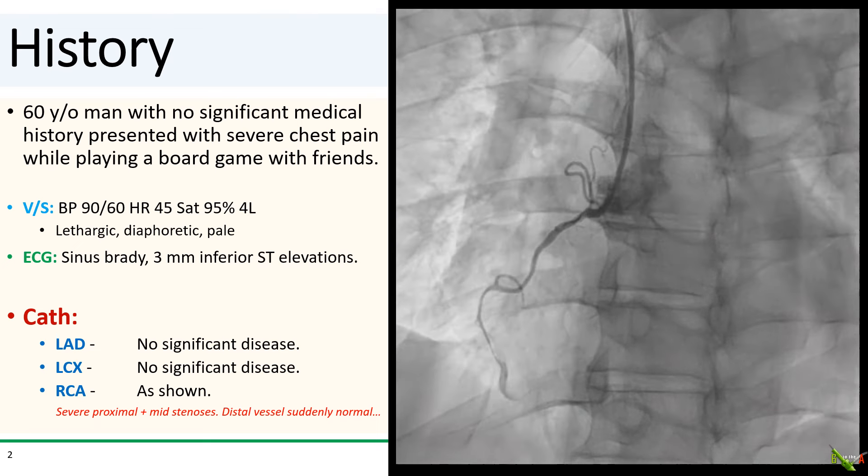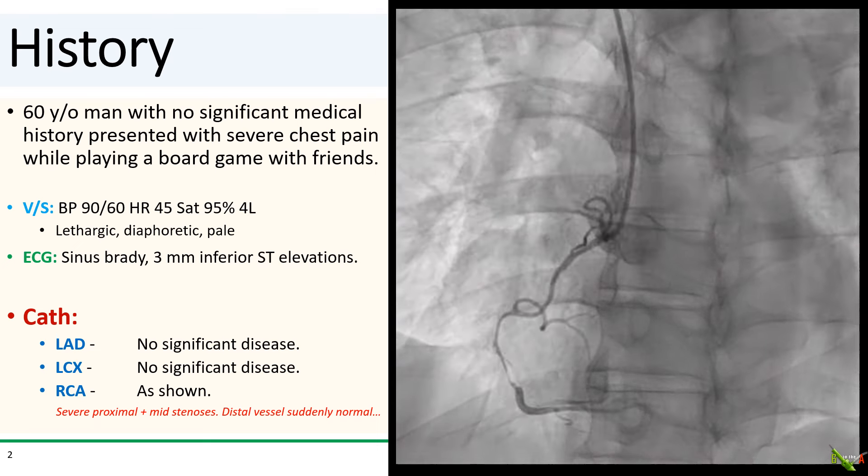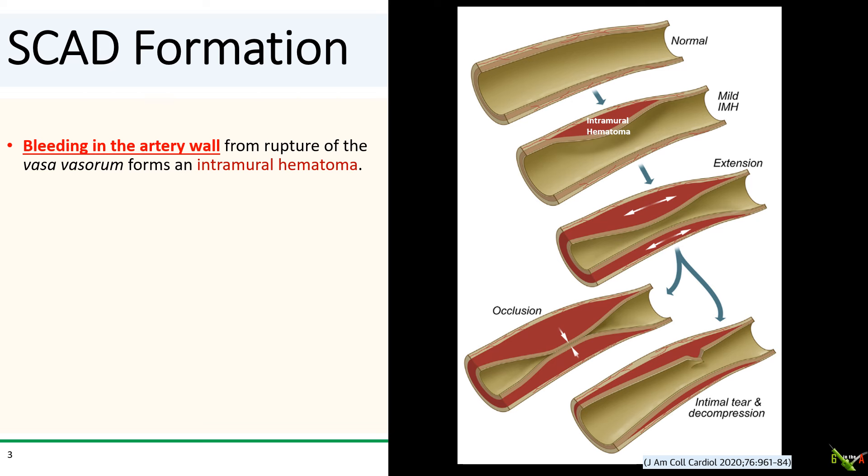So what should we do now? To decide, it helps to understand a little about how SCAD forms in the first place. There are many hypotheses for the mechanism of SCAD formation, but in general it's thought that SCAD comes from bleeding in the wall of the artery due to rupture of the vasa vasorum, which are the microvessels that supply the muscular media of the arterial wall.